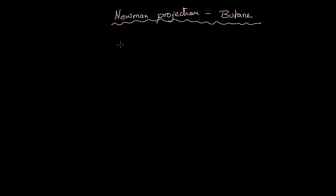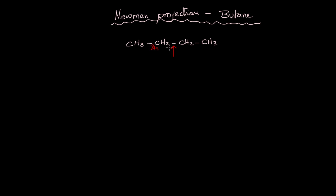We will discuss in detail the Newman projection of butane. Butane can be drawn as CH3-CH2-CH2-CH3. To draw the Newman projection, we will be looking at the rotation around the central C-C bond. This carbon is my eye position, and I will be looking at the rotation around that bond.